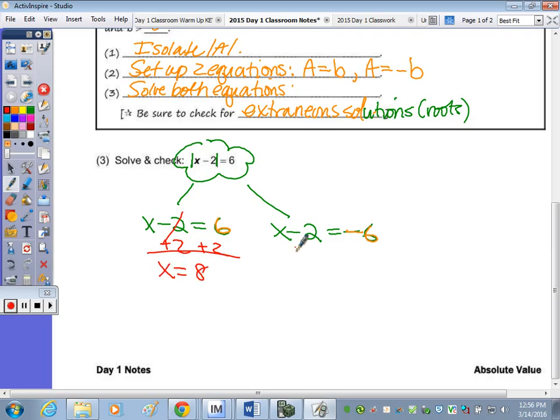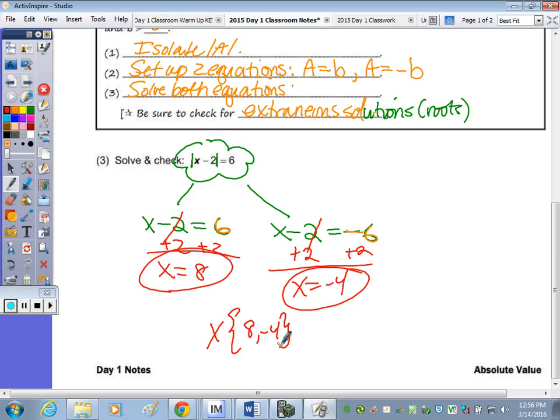So your x is eight, and x is equal to negative four. I don't mind if you write your answers separate and just circle. You can put it in set brackets for a solution set. That's up to you. But now we have to check. So I'm going to check x equals eight, x equals negative four. To check, you substitute in the original equation. So is the absolute value of eight minus two equal to six? Yeah. Eight minus two is six, and the absolute value of six is six.